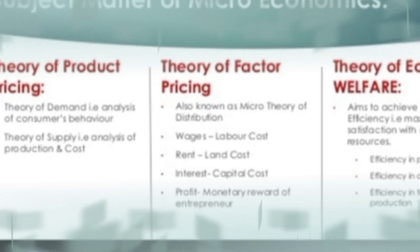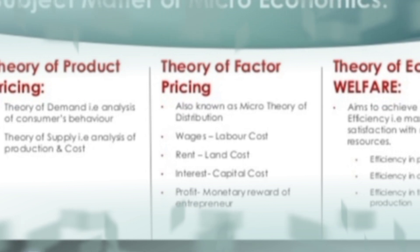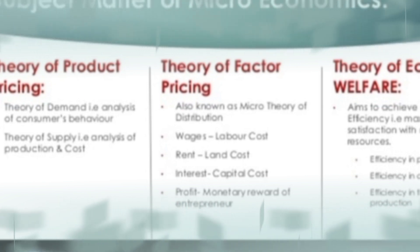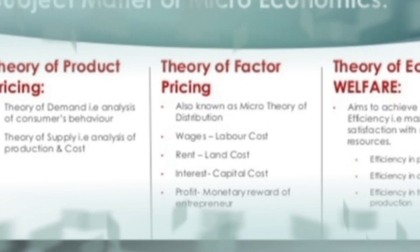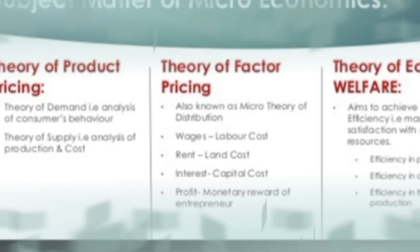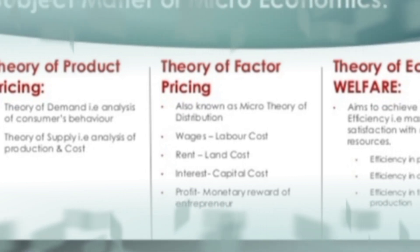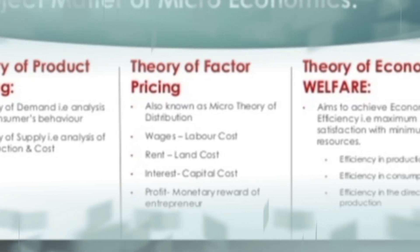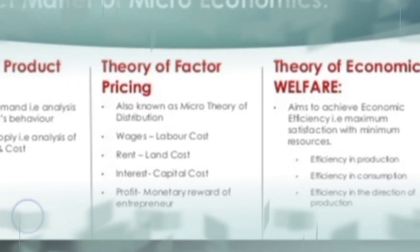Next is the theory of factor pricing. Factor pricing consists of four factors of production: land, labor, capital, and entrepreneurship. Income as a reward is given to each of them — that is rent, wages, interest, and profit — and this comes under factor pricing.